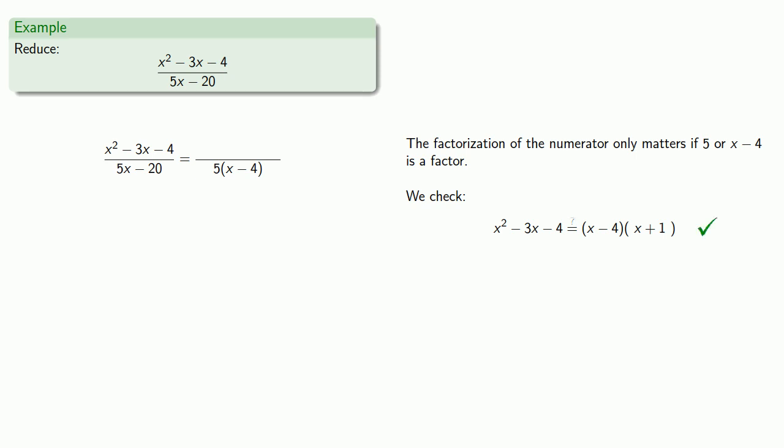So, equals means replaceable. So instead of x squared minus 3x minus 4, we can write x minus 4 times x plus 1. We have a common factor of x minus 4 that we can remove, leaving us with...